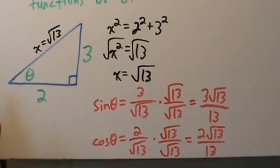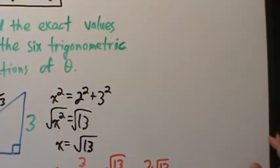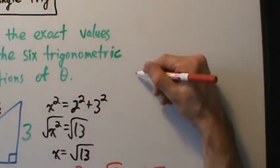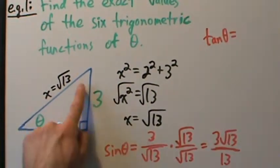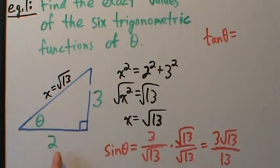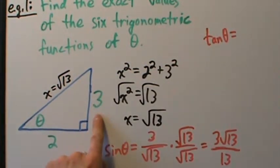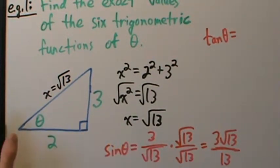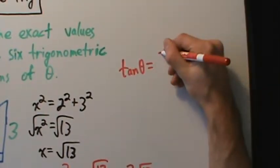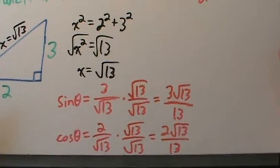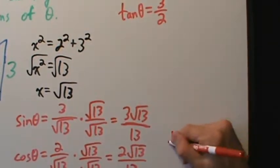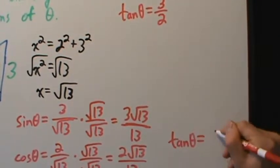Tangent of theta is one of the two we could have found without the hypotenuse. Tangent is opposite over adjacent. The side opposite theta is 3, the adjacent side is 2, so tangent of theta equals 3 over 2. That's really all there is to it.